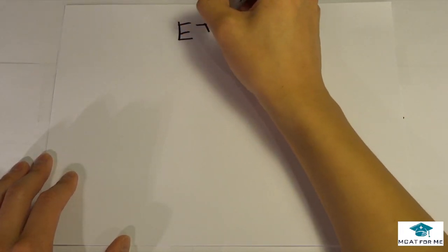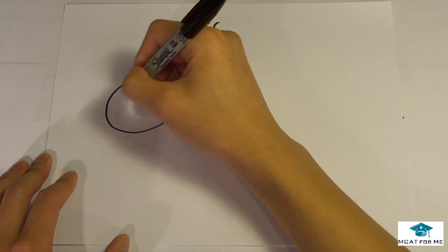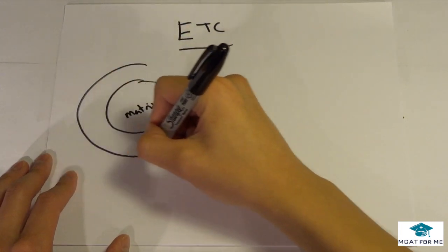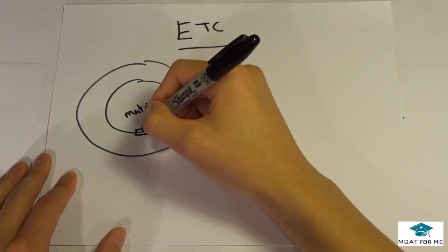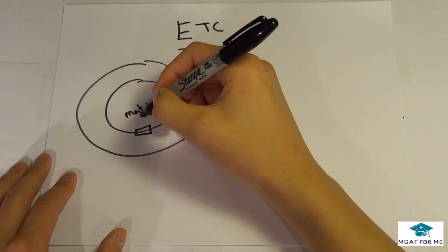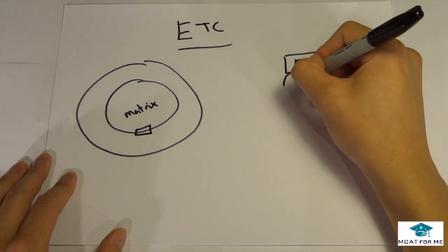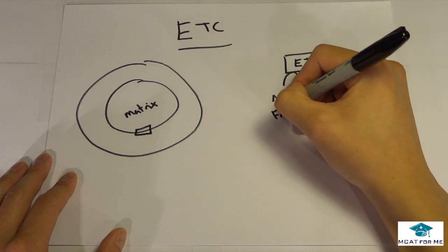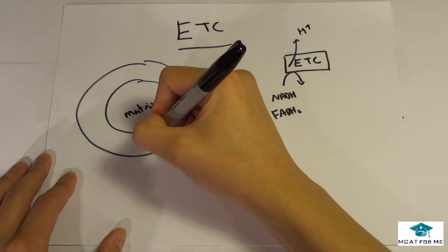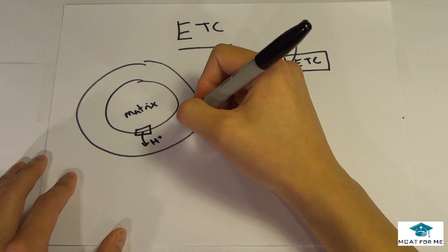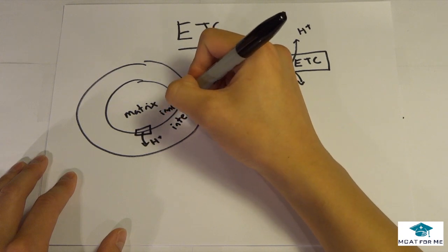And the final one is the ETC. What do we need to know about the ETC? Well, the ETC, so say this is the matrix of the mitochondria. This is the inner membrane. This is the outer membrane. The ETC is right there. It's on the inner membrane. So let's just draw it like this. So say this is the ETC. We're going to have all our NADH and our FADH2. They are going to release their hydrogens and their electrons. So all the hydrogens are going to go into this area right here, which is called the intermembrane space.